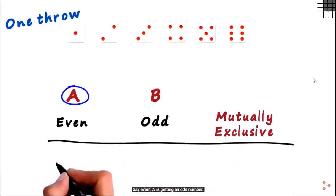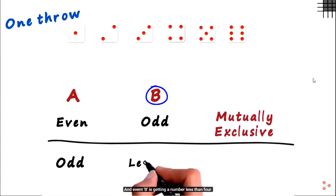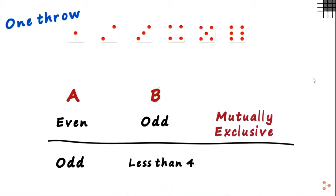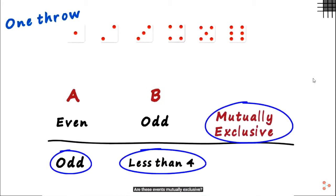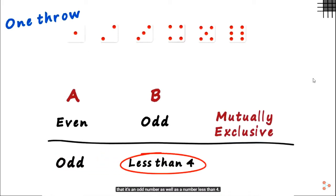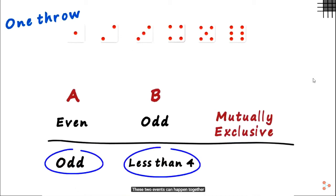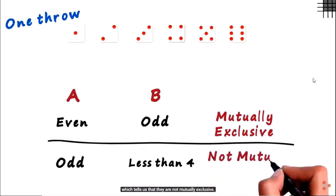Now let's look at another case. Event A is getting an odd number and event B is getting a number less than four. Are these events mutually exclusive? If we get a one, it is an odd number as well as a number less than four. The same applies if we get a three. These two events can happen together, which tells us they are not mutually exclusive.